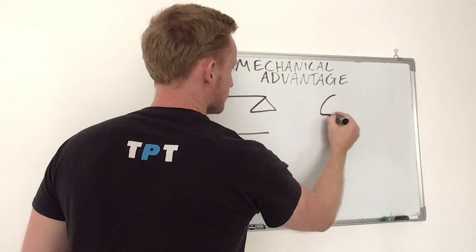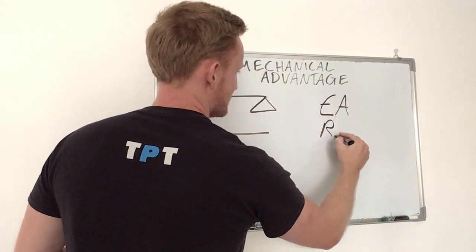And the way that we need to calculate if something is mechanically advantaged, we need to be thinking about the effort arm and the resistance arm.